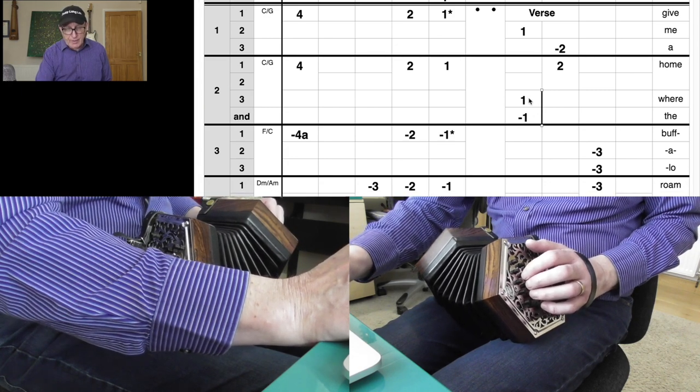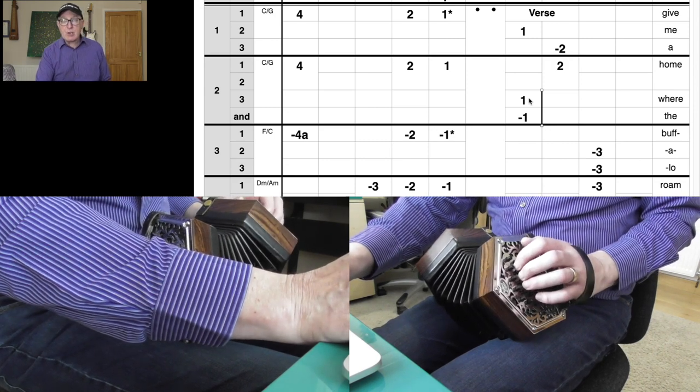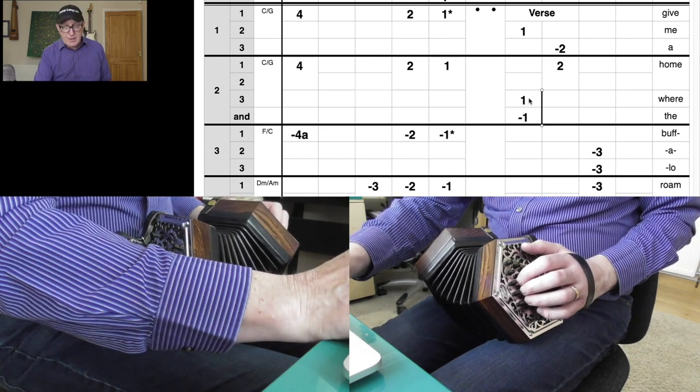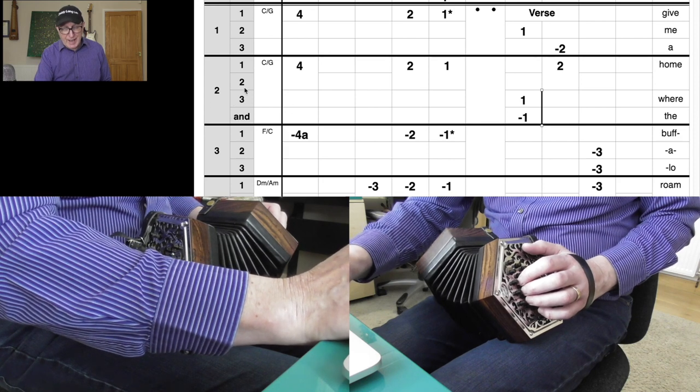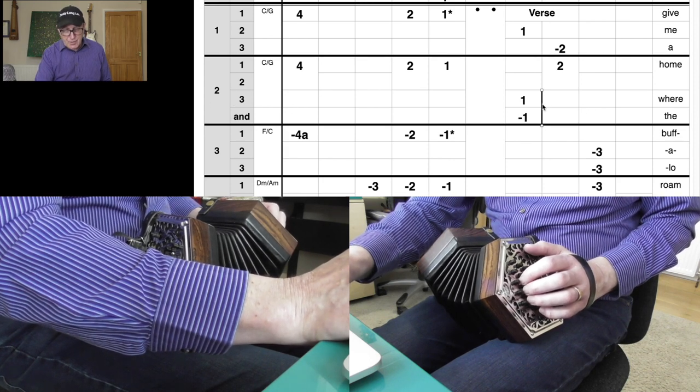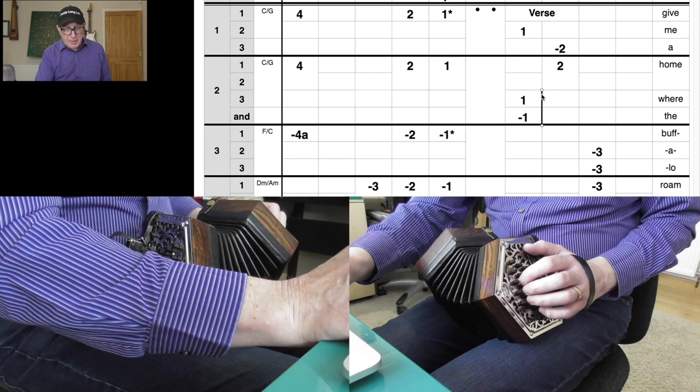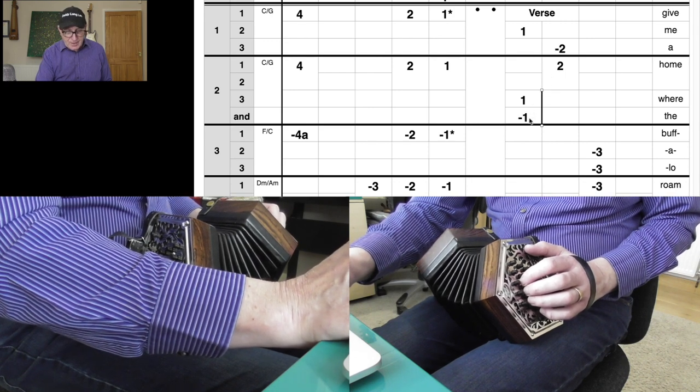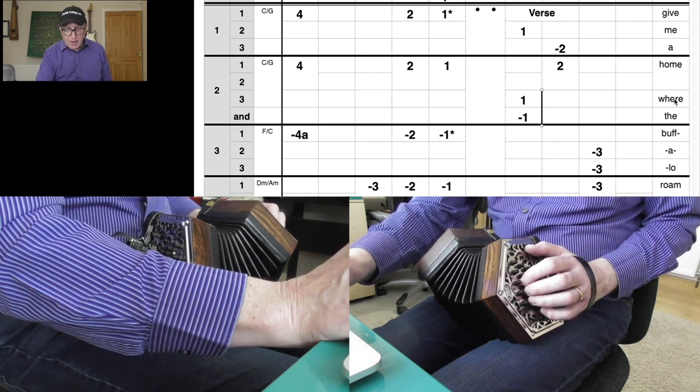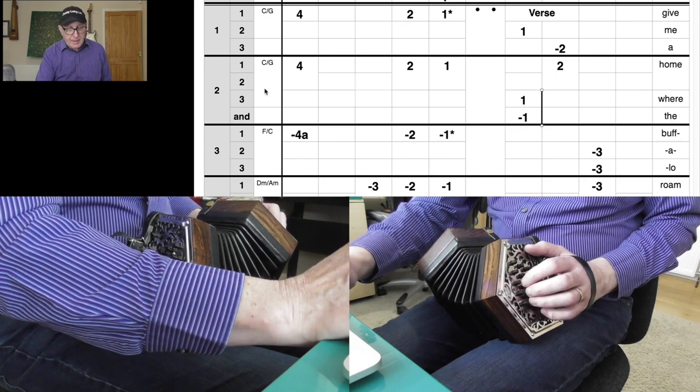So you don't have to look over here at the counting to know that these two notes are quicker. So the timing is one, two, three, and. So these two cells are three and. Where the words are 'where the,' it's still a C chord if you've got a CG or a G chord if you've got GD.